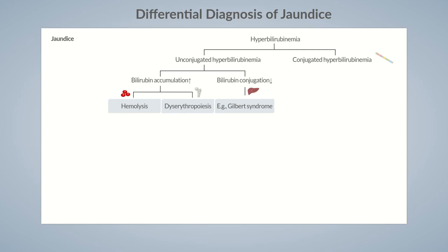Conjugated hyperbilirubinemia can be further categorized into diseases associated with damage to the hepatocytes, commonly known as liver cells. One example is acute hepatitis caused by viruses, drugs, or toxins. Another common cause is liver cirrhosis that occurs with end-stage liver disease. In such cases, levels of serum direct and indirect bilirubin are elevated, as both conjugation and secretion are affected.